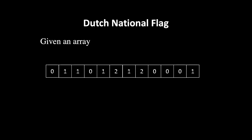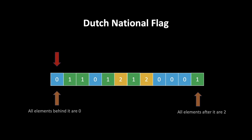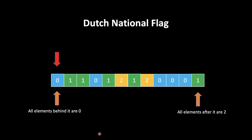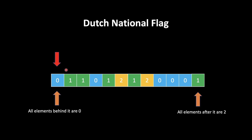This problem is also called the Dutch National Flag. We have an array and we need to sort it in a single traversal without using any sorting algorithm. To make it easier to understand, we'll color the array: zero is blue, one is green, and two is yellow. We'll have three pointers — a left pointer (all elements behind it are zero), a right pointer (all elements after it are two), and a red traversal arrow.